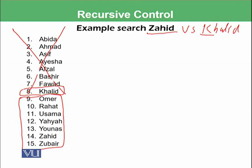Next we have the sub-list starting from the ninth position until the fifteenth position, and again we find the midpoint. There are seven total elements, so the midpoint is the fourth element — Yahya. Zahid is compared with Yahya in the second step. Z in Zahid has a greater ASCII value than Y in Yahya, so our actual target does not lie in this portion; it lies further right.